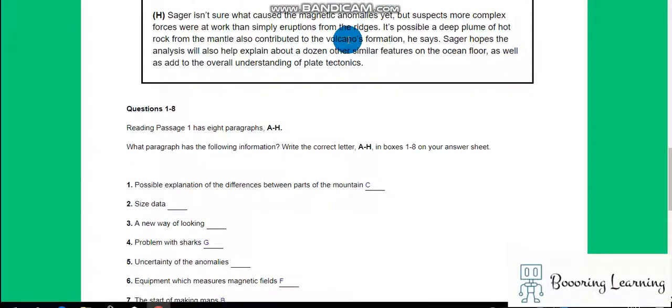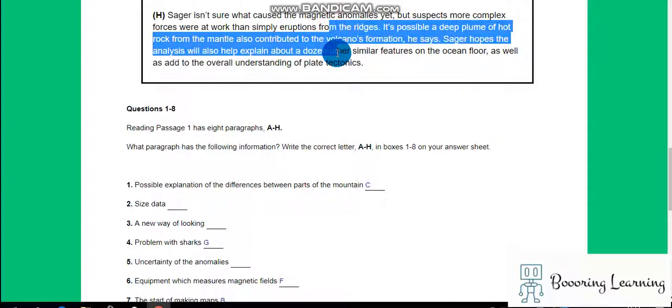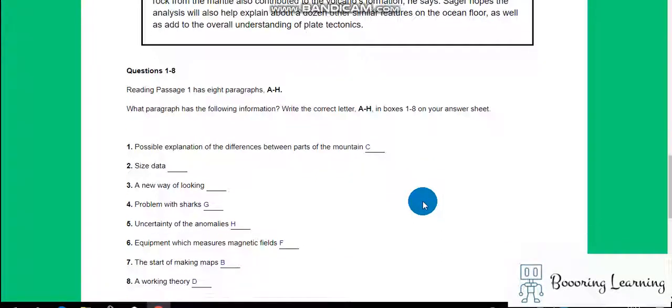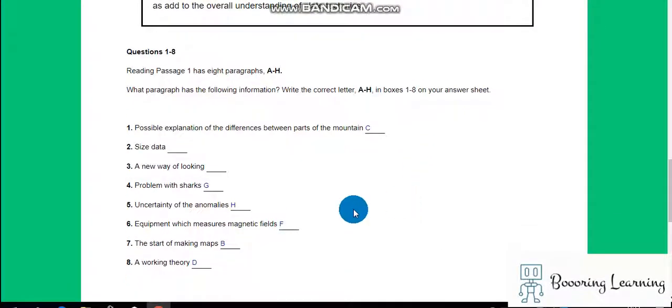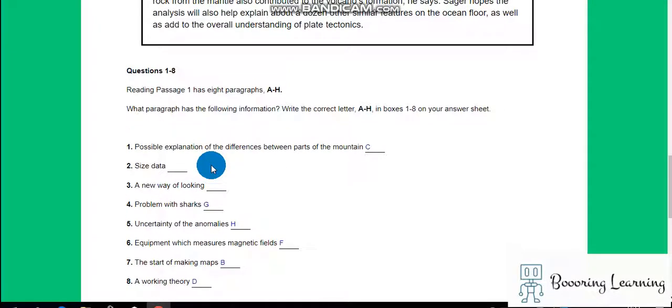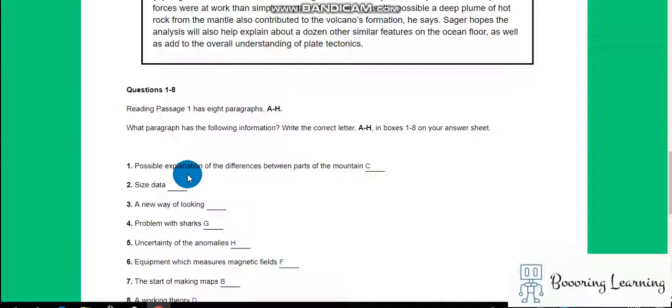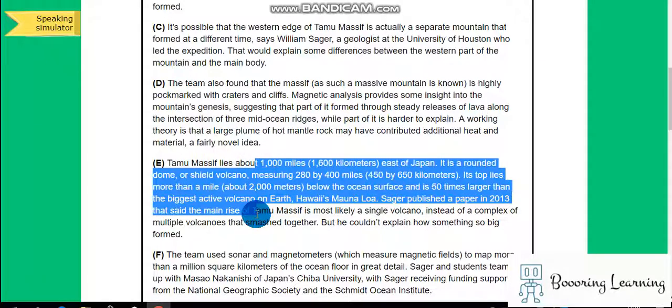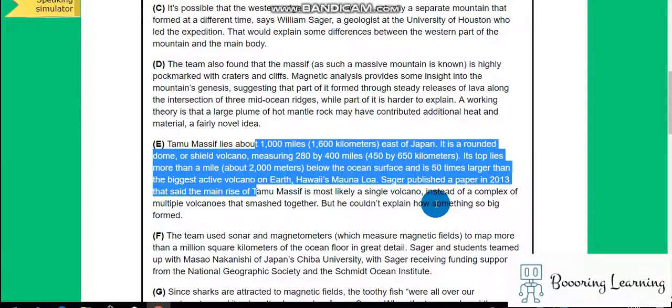Isn't sure what caused magnetic anomalies yet but suspects more complex forces were at work than simply eruptions from the roots. Isn't sure what caused it, H. OK. A, C, D, E, F, C, D. Couldn't explain how something so big formed.